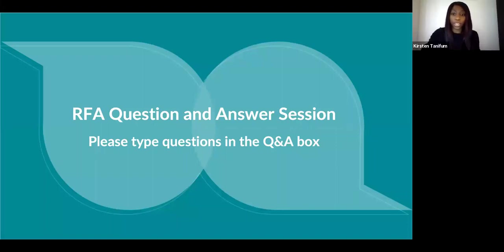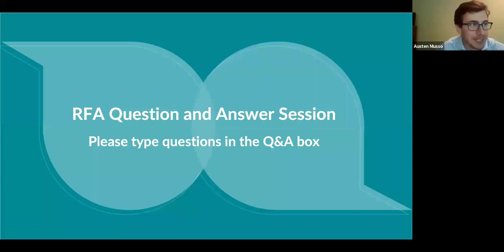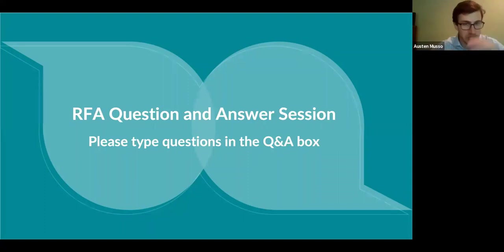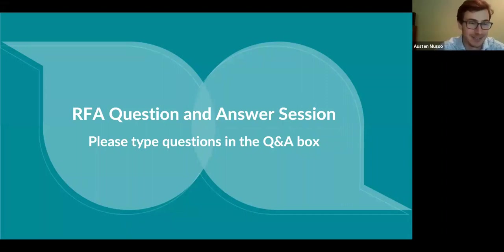As a follow-up question: what is a DUNS number and SAM registration? The Dun & Bradstreet number is something commonly used by the U.S. government for all organizations that receive funding from them. We can put a link to the Dun & Bradstreet website—these are free for any entity to apply for and receive so they can work with the federal government. Similarly, SAM.gov—the System for Award Management—is another registration process you need to go through to be engaged with funding from the U.S. government.